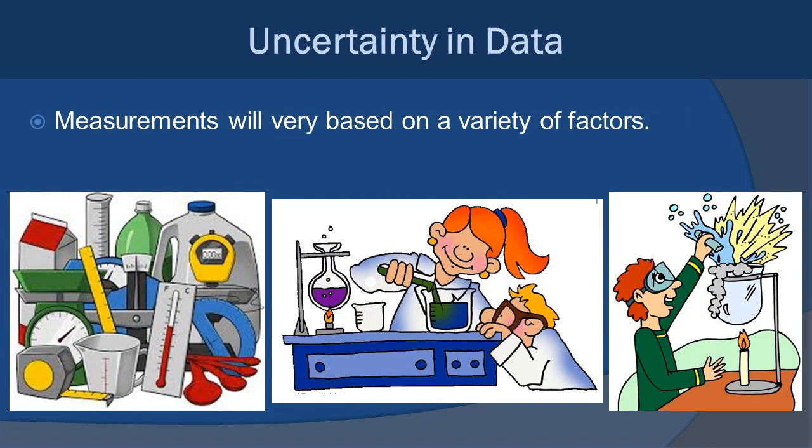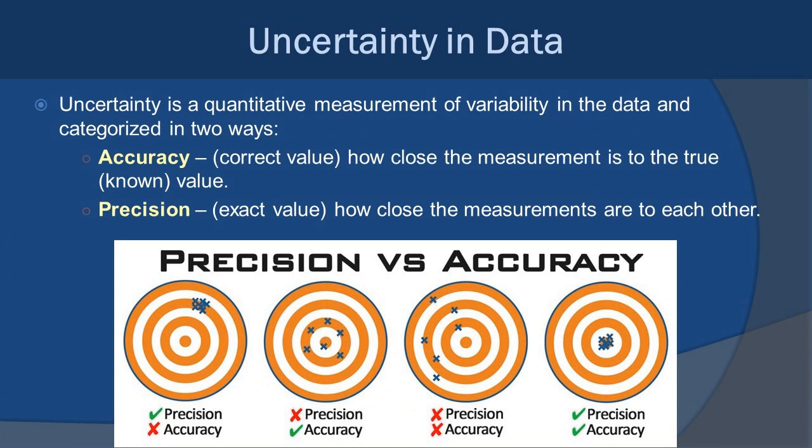Now, anytime you're collecting data, you're probably collecting some sort of measurement. And there are a ton of different tools you can use to do so. However, data collection and measurement in general can vary based on a lot of different factors. There can be things like human error where you read the numbers wrong, or possibly there's a factor or a variable in the room that's maybe controlling something like temperature or humidity. You could have forgotten to calibrate one of the digital instruments and so the measurements are off. There are just numerous things that could go wrong. Either way, we have to deal with uncertainty. And uncertainty is defined as a quantitative measurement of variability in the data. We can categorize it in two ways, through accuracy and precision.